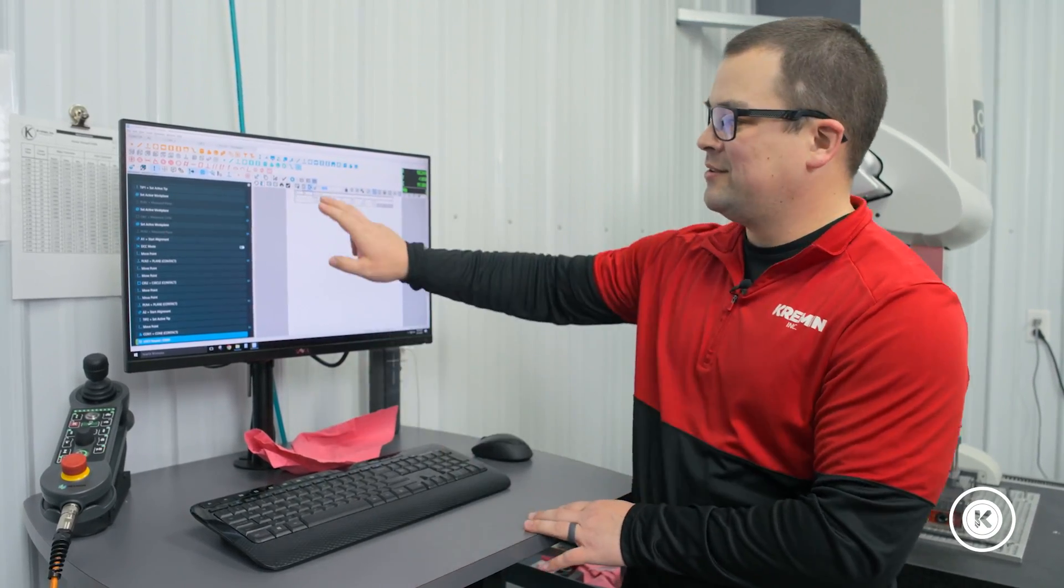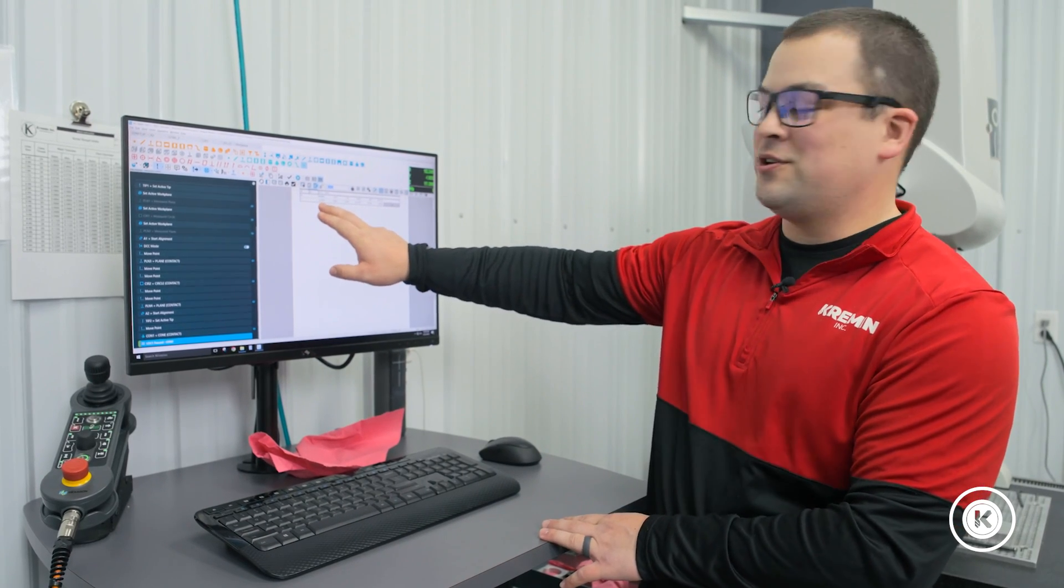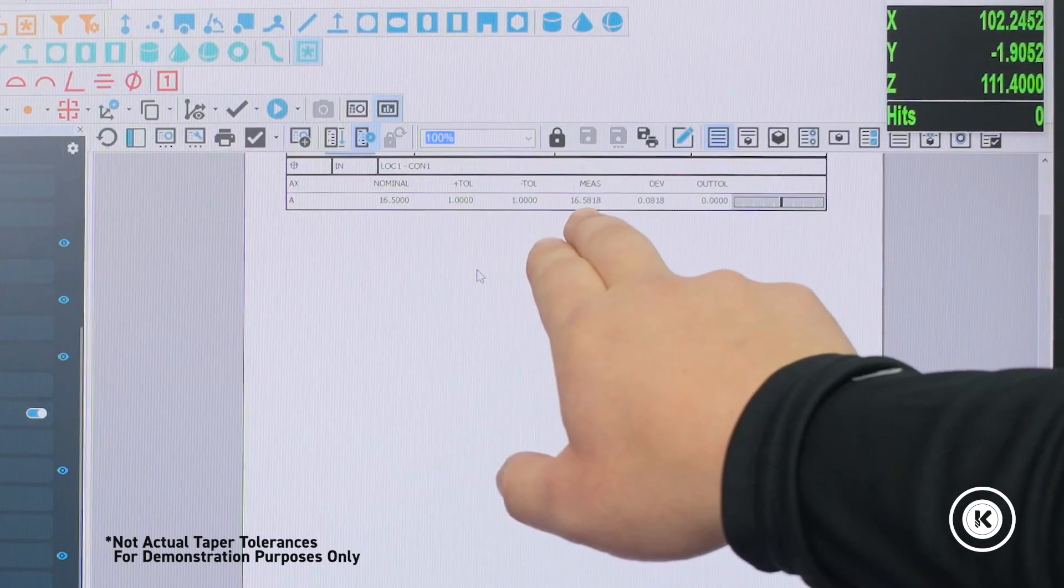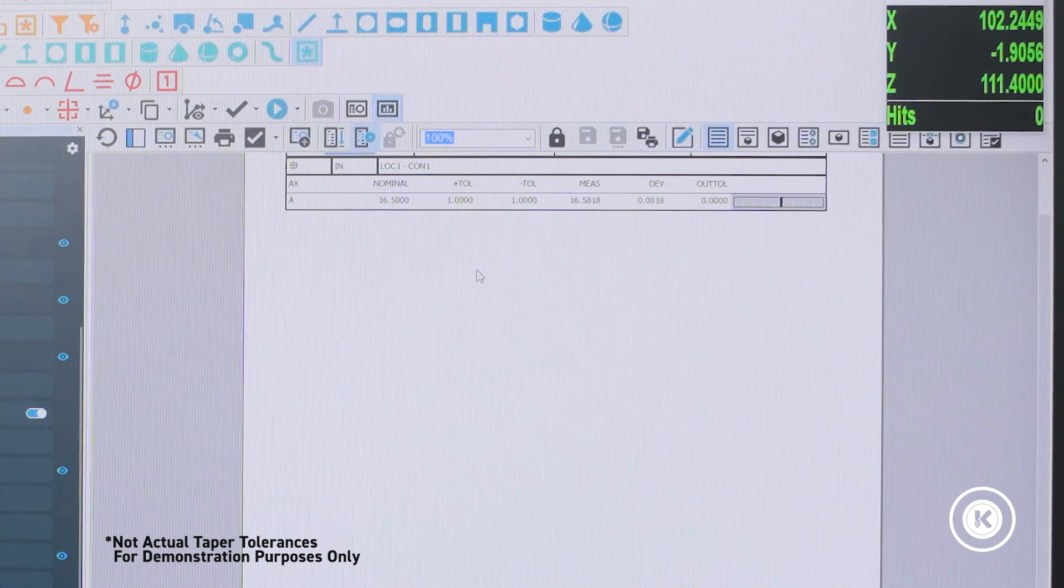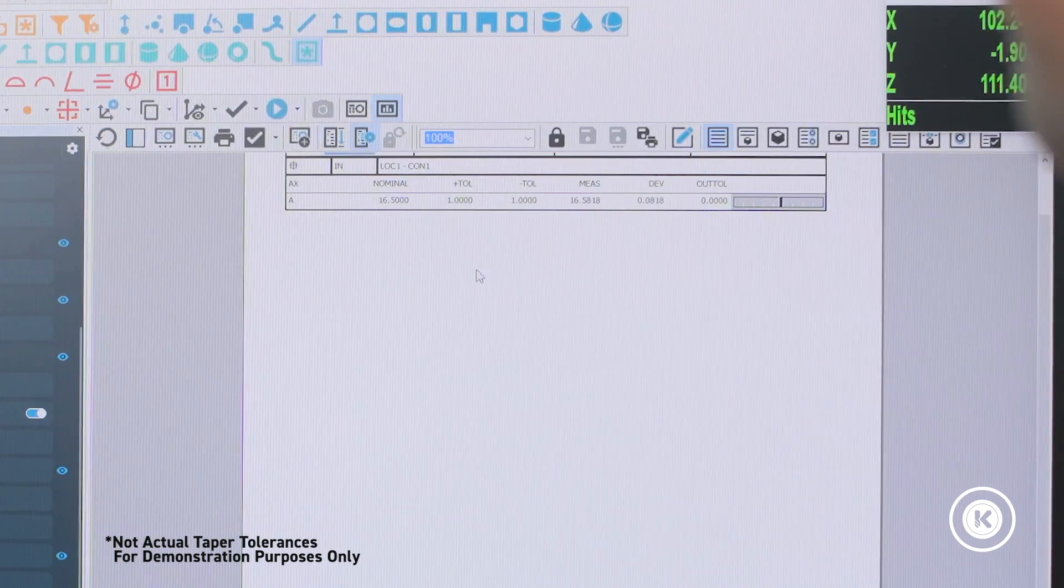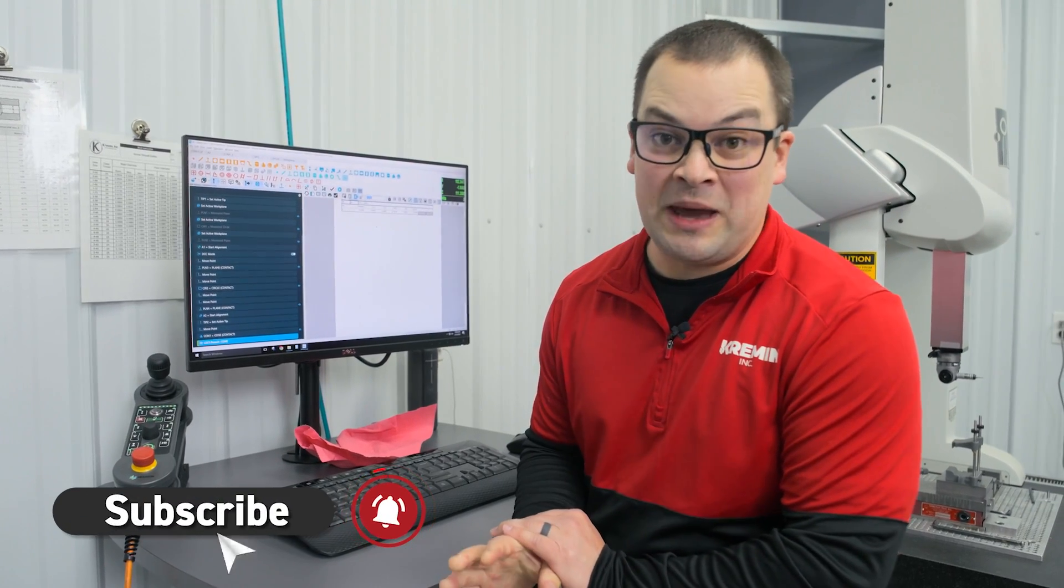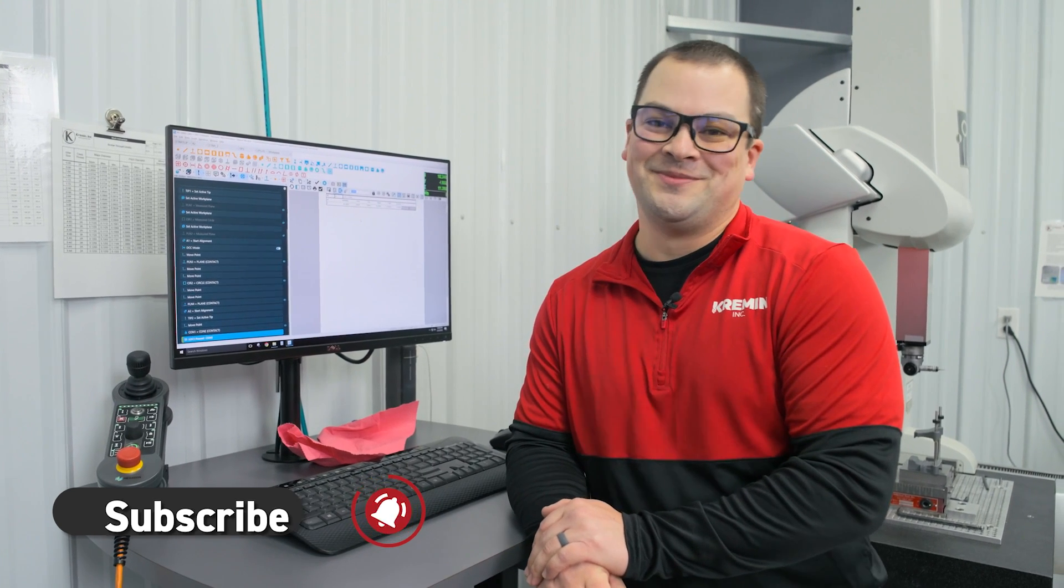Now that that program's done, let's check our results. This calls for a 16 and a half degree taper. We measured it at 16.58, which keeps us right in tolerance. All in all, this took about 15 minutes. We'll tell Mike it took five—he's bad at time anyway. For more tips and tricks, like and subscribe. Until next time.